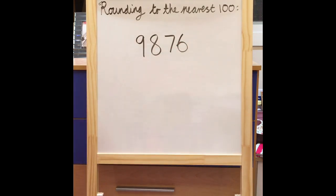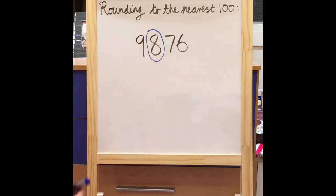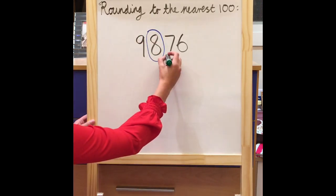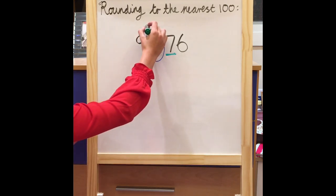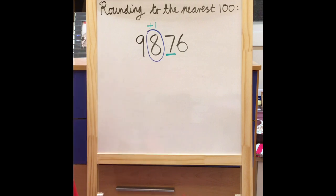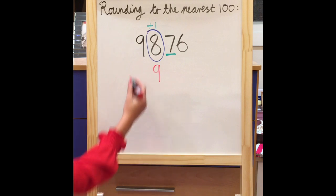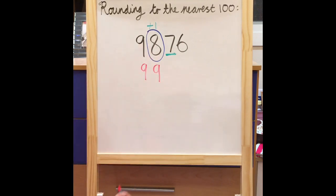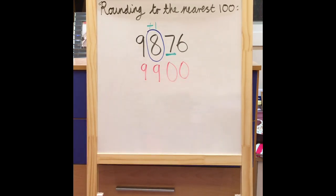If we were asked to round 9,876 to the nearest hundred, the process would be exactly the same. We're rounding to the nearest hundred, so we must circle our hundreds column. Circle the number, look next door — next door I have my seven in my tens column. Five or greater add one more: seven is five or greater, so I must add one more to my hundreds column. So now in my hundreds column I have eight plus one which is nine. Numbers on the left stay the same, so my nine stays the same. Numbers on the right, zero is your name. So 9,876 rounded to the nearest hundred is 9,900.